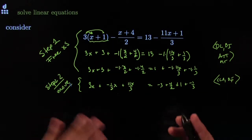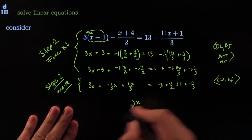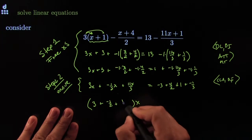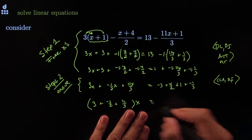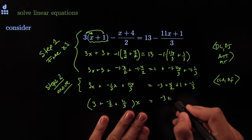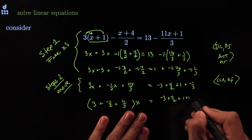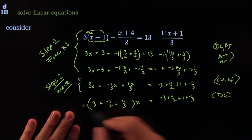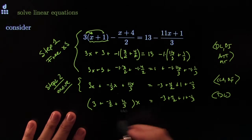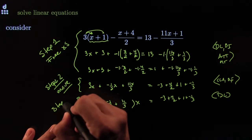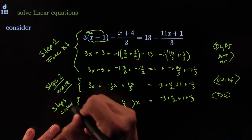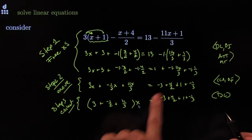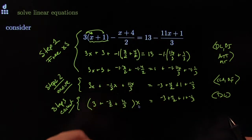Then we go on to step three: gather your X's. We un-distribute, factoring out X: X times 3 plus negative one-half plus 11 over 3, equal to negative 3 plus 4 over 2 plus 1 plus negative 1 over 3. This is by the distributive law. You can simplify some of these pieces, but that's not essential. This is step three — I've collected all my X's into just one X with one coefficient and no X's on the other side. I'm ready for the fourth and final step.